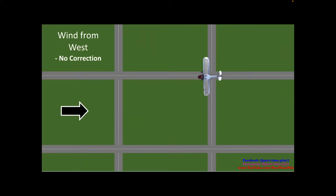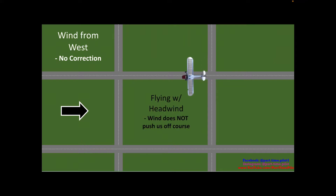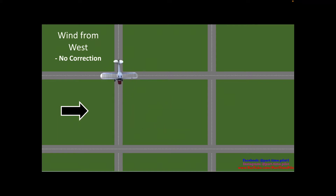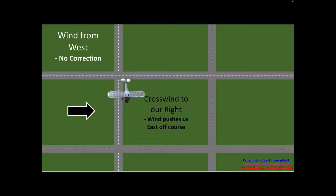Now we have wind from the west — the black arrow is the wind coming out of the west. This is if we do not make any wind corrections and still do the same 90-degree turns. On the first leg we're flying into a direct headwind, so the wind does not push us off course. It will slow our ground speed but it won't push us sideways. When we make the next 90-degree turn, this wind is now a crosswind from our right and it's going to push us off the road — our course gets pushed off to the east.